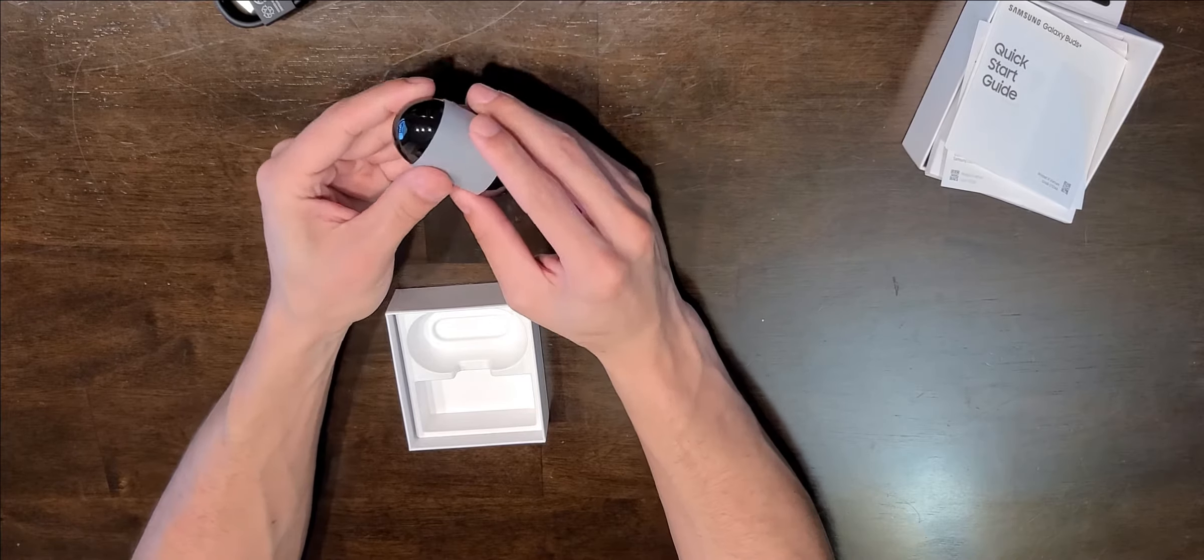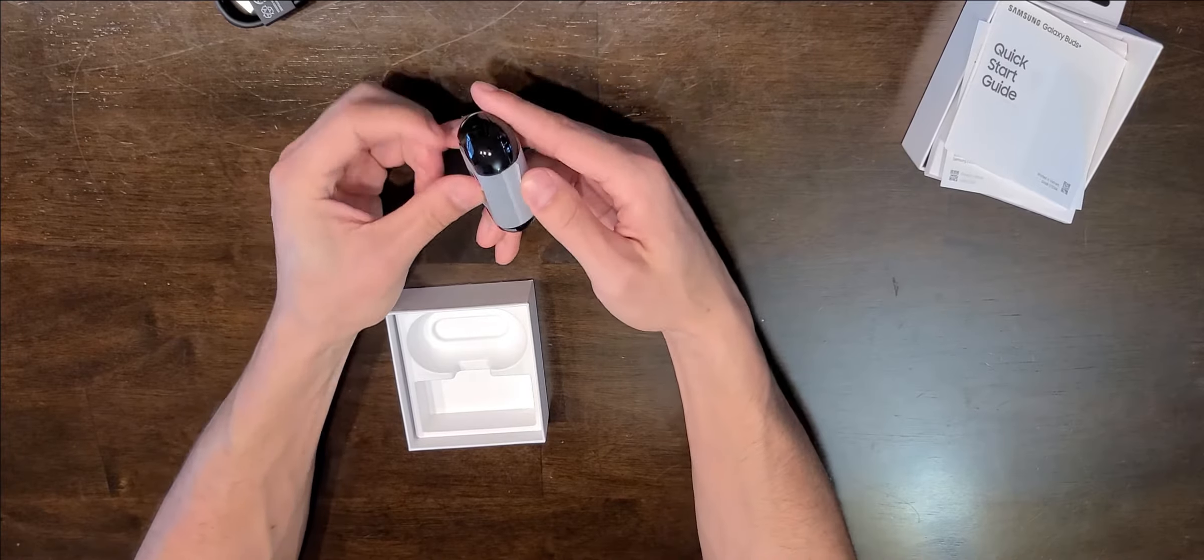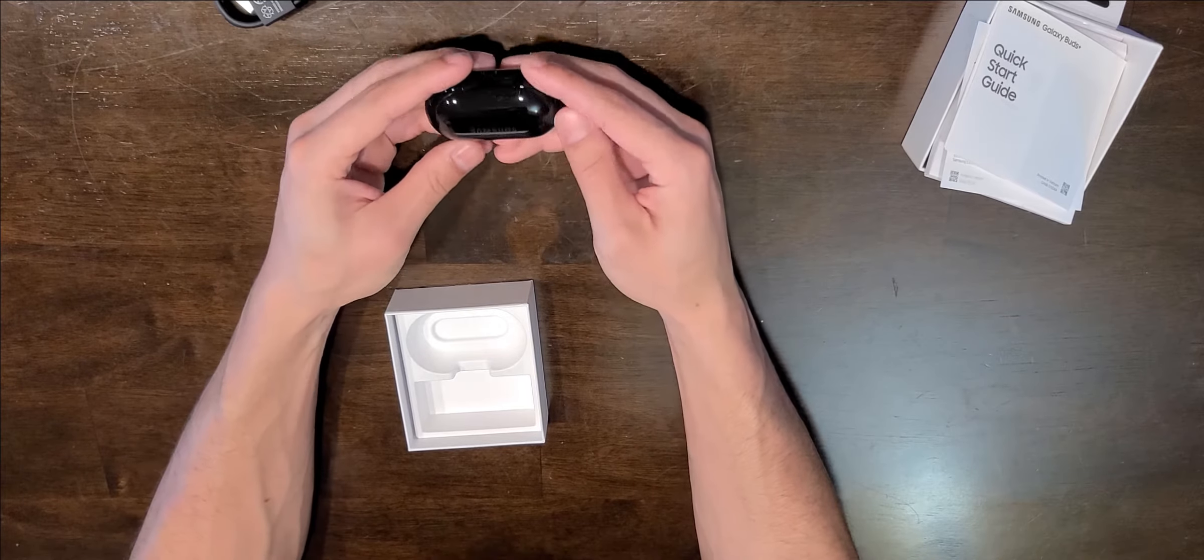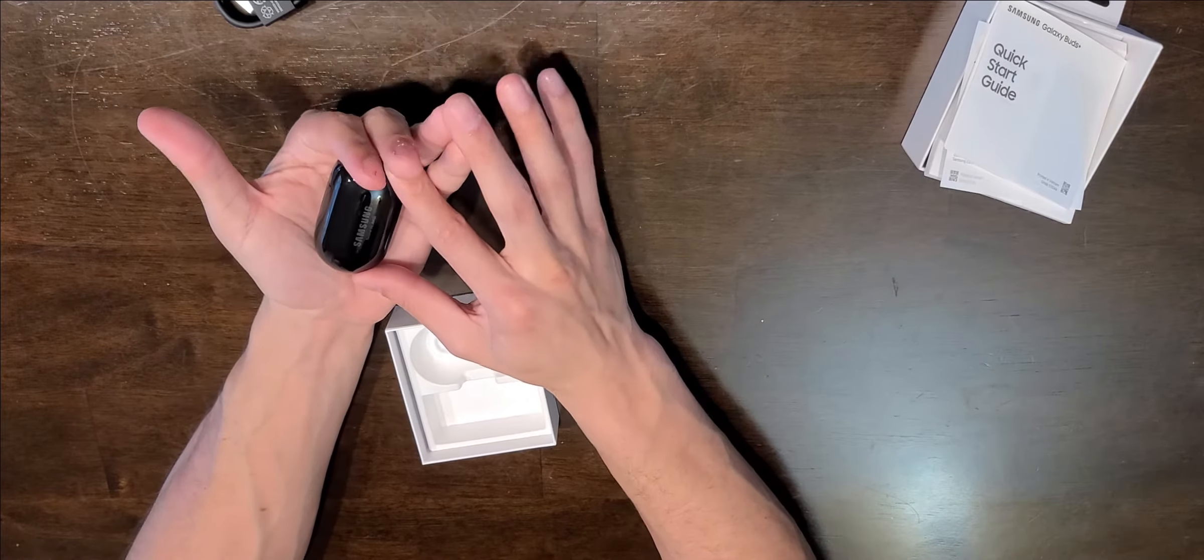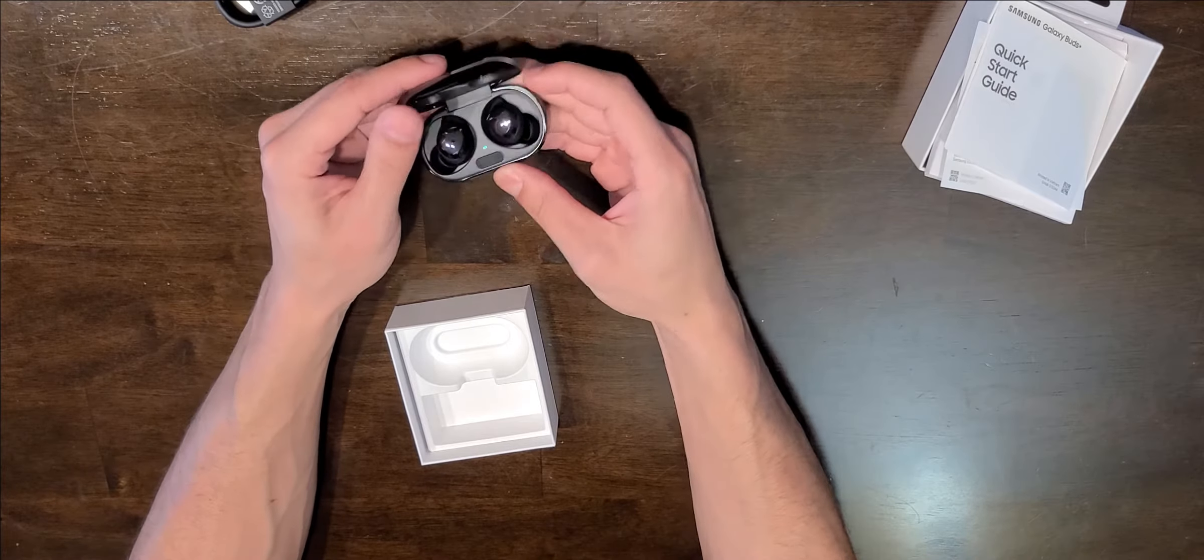We have here, let's see, this tissue paper. What kind of cheap tape is this? Alright, trash. Oh, this is a shiny gloss Samsung sound by AKG. This thing is small. It's the same size as the original ones. This is stiff.